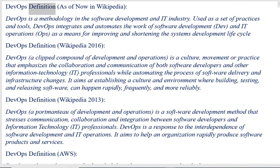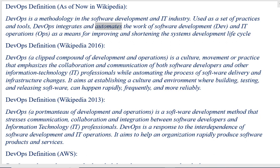DevOps definition, as of now in Wikipedia: DevOps is a methodology in the software development and IT industry, used as a set of practices and tools. DevOps integrates and automates the work of software development and IT operations as a means for improving and shortening the system's development life cycle.